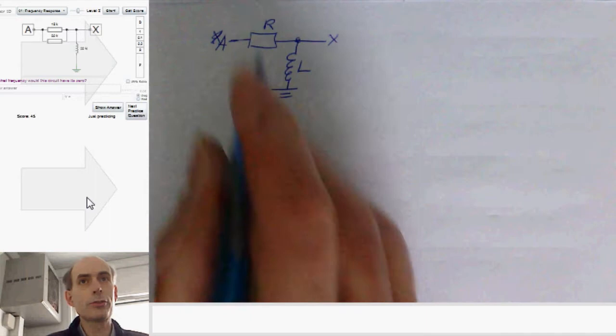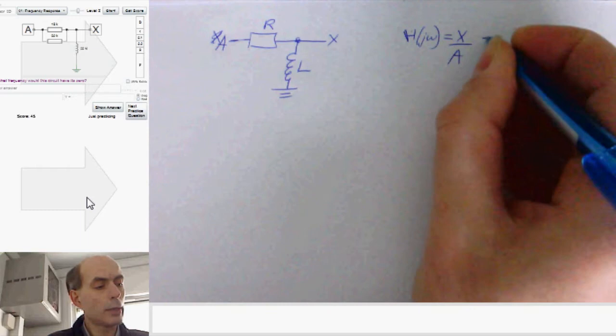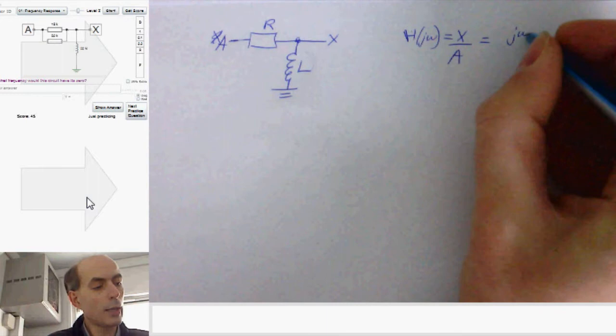We could write the gain, H of j omega, as the output divided by the input. That would here be the impedance of this term, which is j omega L divided by the total impedance, R plus j omega L.